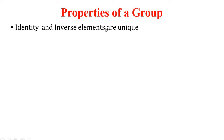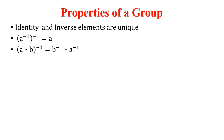Identity and inverse elements of a group are unique — every group possesses only one identity element, and each inverse is also unique. Another property: (a-inverse)-inverse equals a, meaning if you take the inverse of an element twice, you get back the same element.